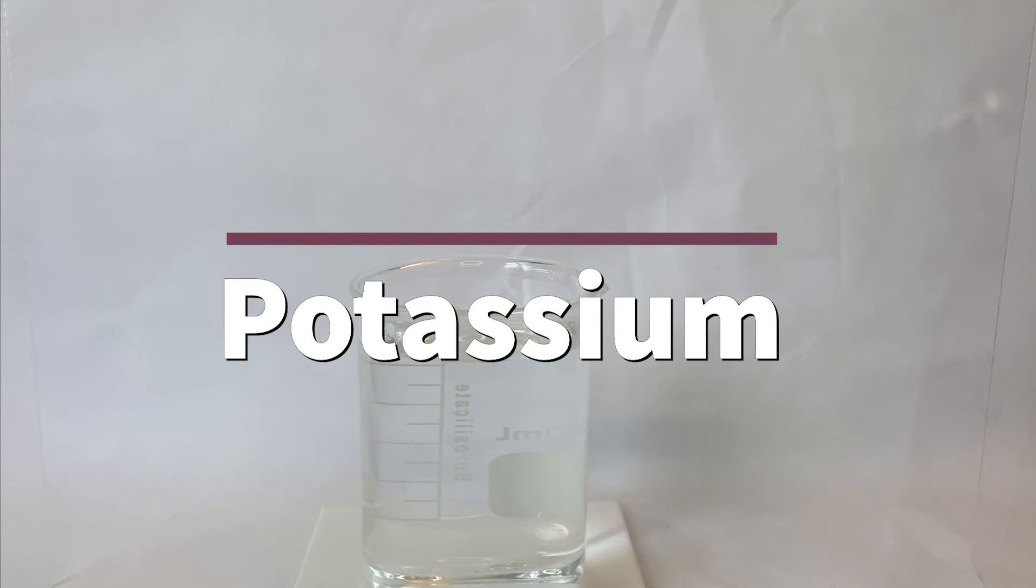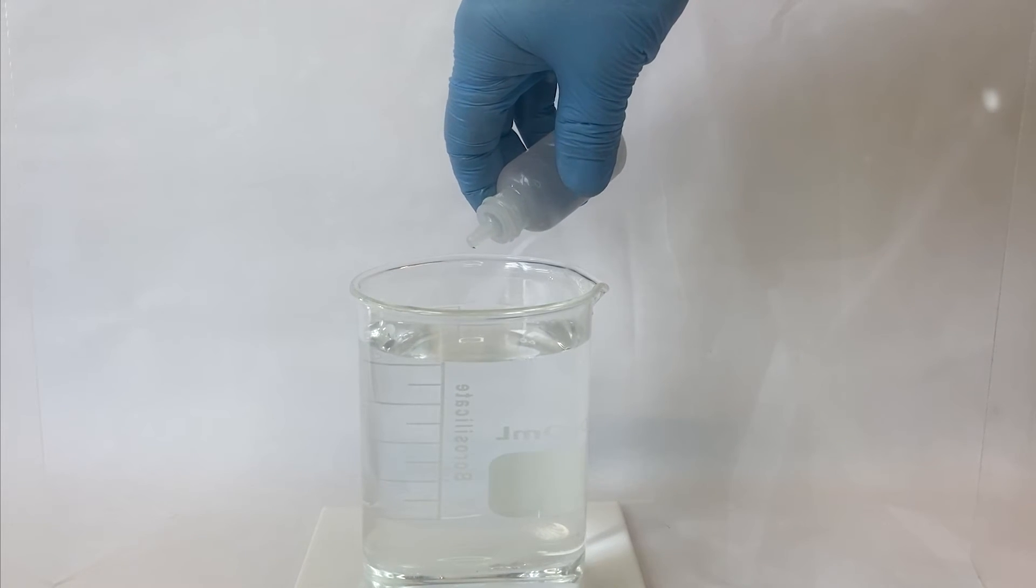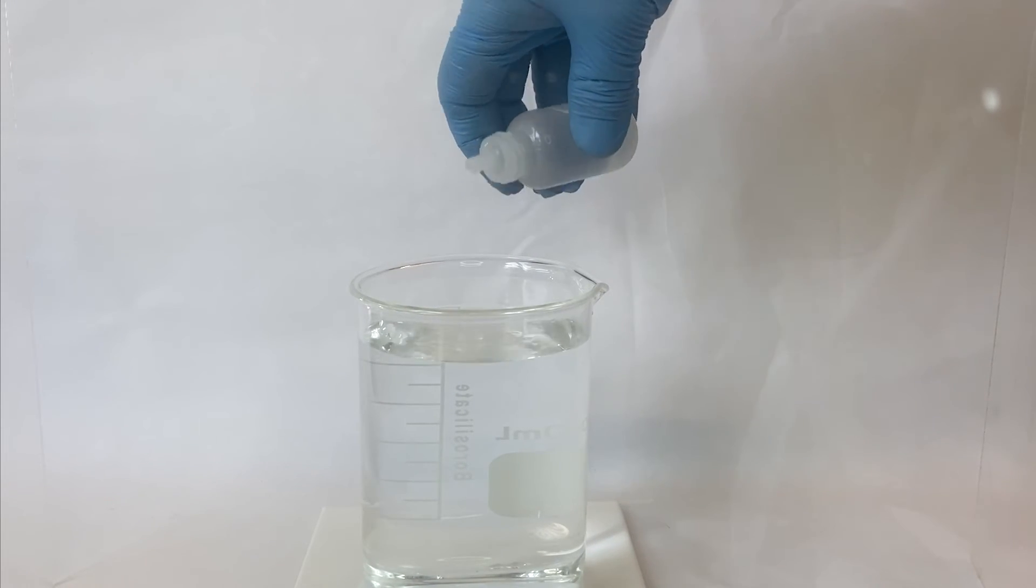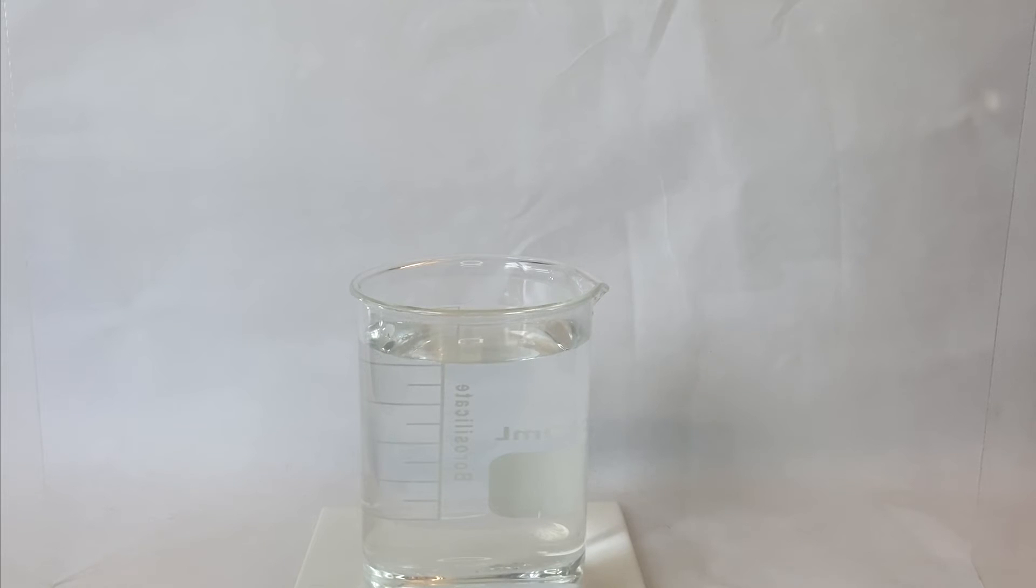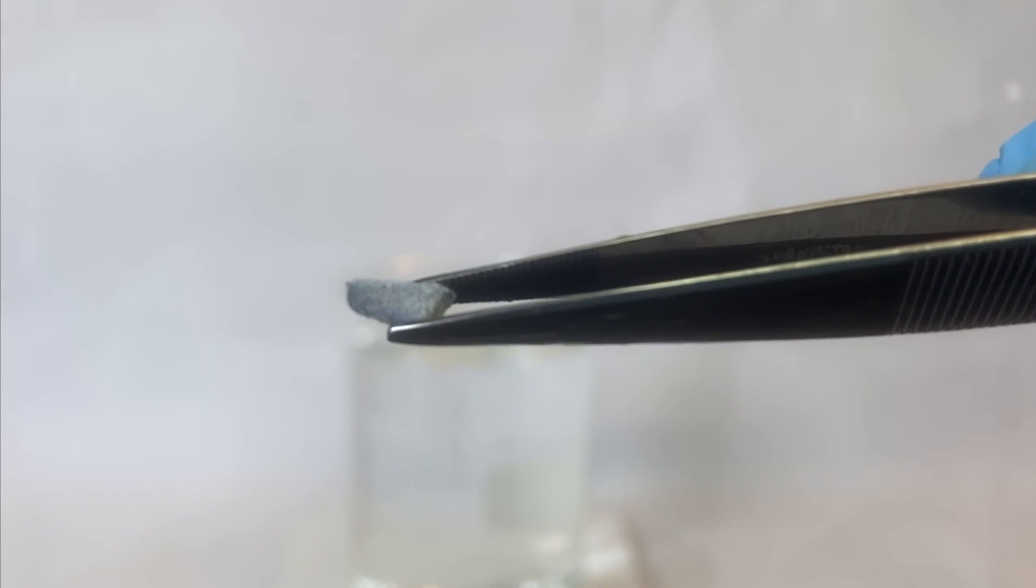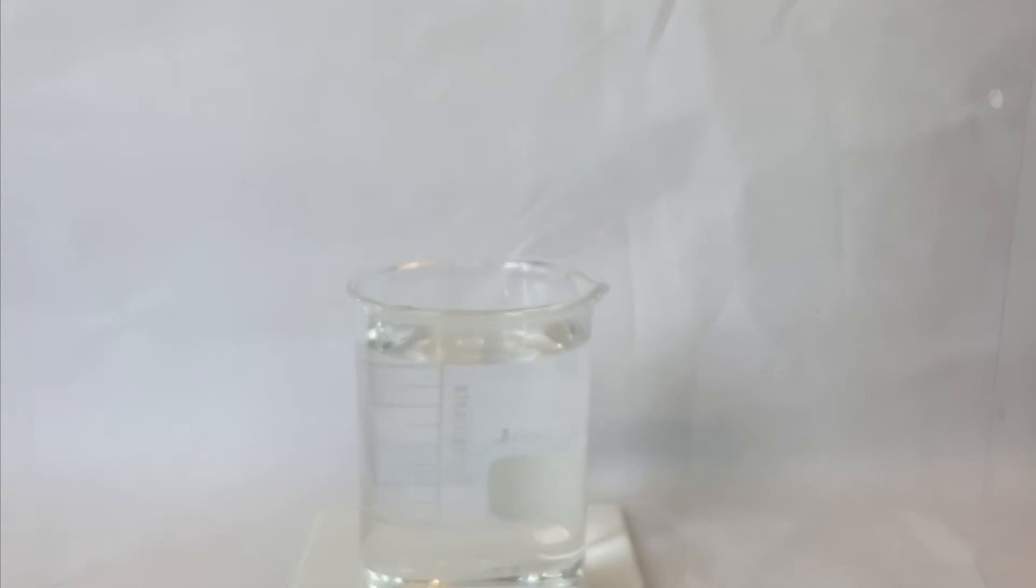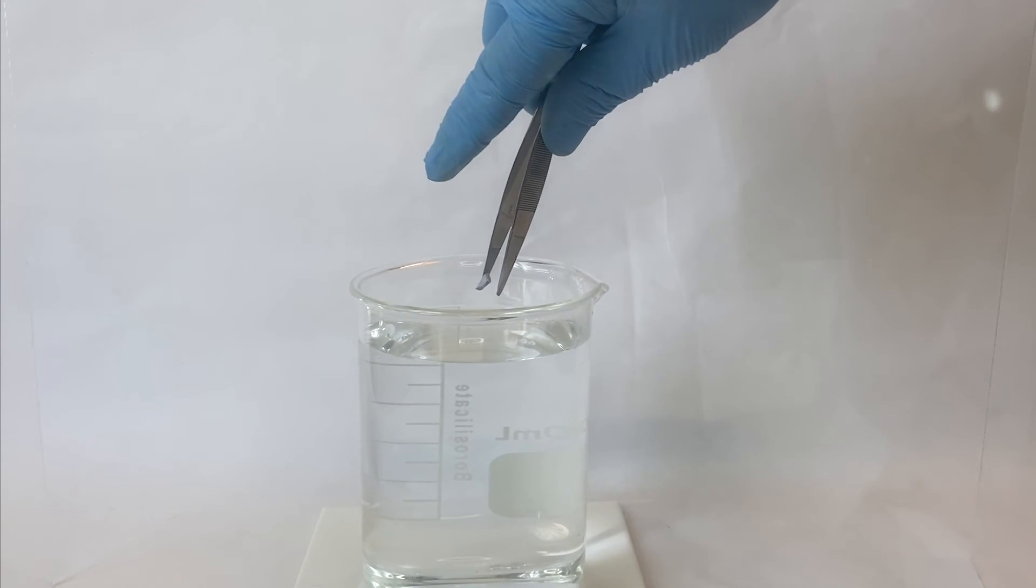The last demo in our first investigation today is potassium. The setup for this demo is the same as the others. I have a beaker of distilled water, and to that I'm going to add a few drops of phenolphthalein. Potassium metal has similar properties to lithium and sodium. And note that I'm trying to use the same size sample for all three of these demos today. Let's add the potassium to the water and see what happens.